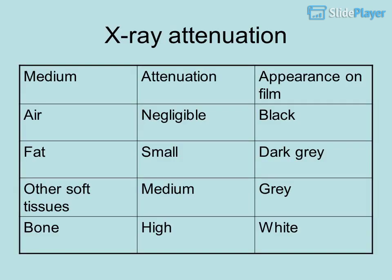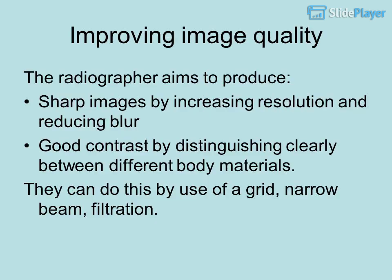X-ray attenuation by medium and appearance on film: Air — negligible attenuation — appears black. Fat — small attenuation — appears dark grey. Other soft tissues — moderate attenuation — appears grey. Bone — high attenuation — appears white.